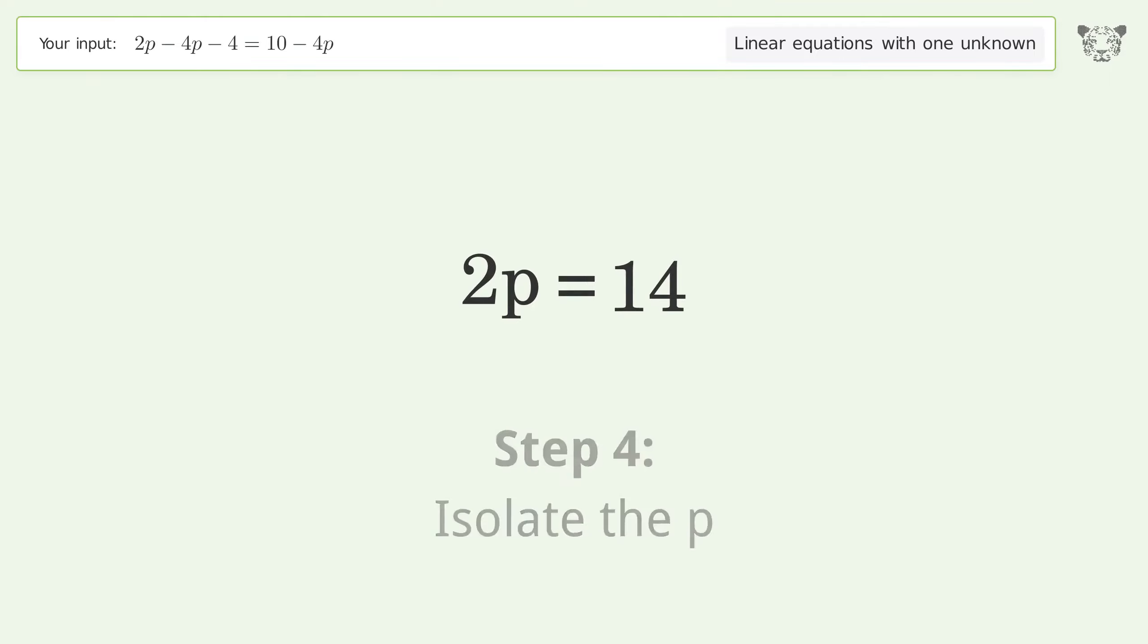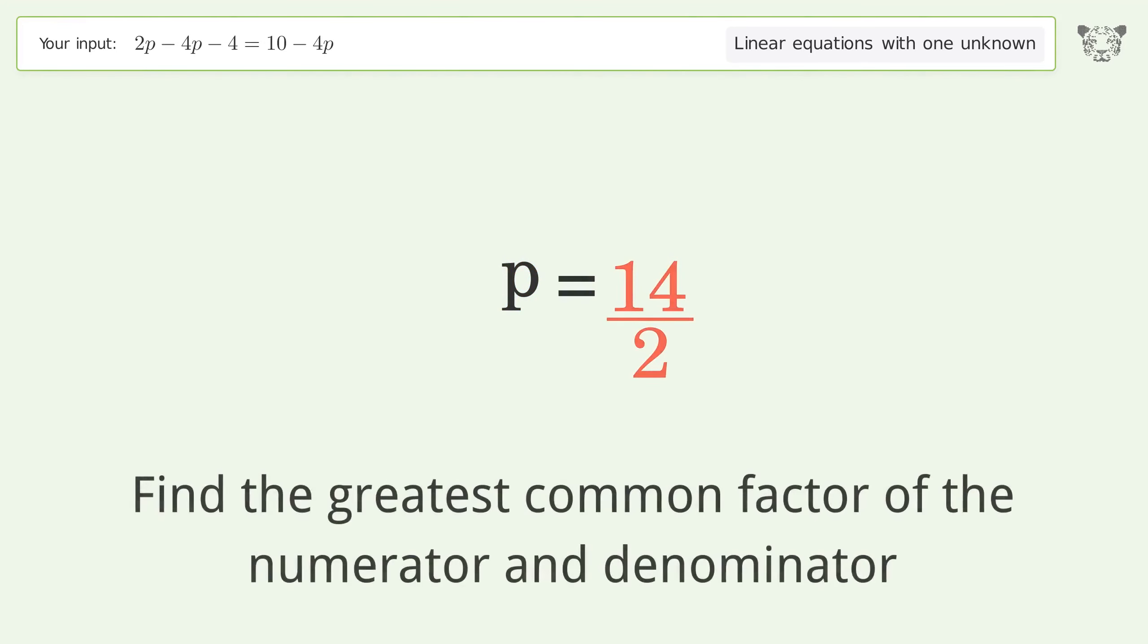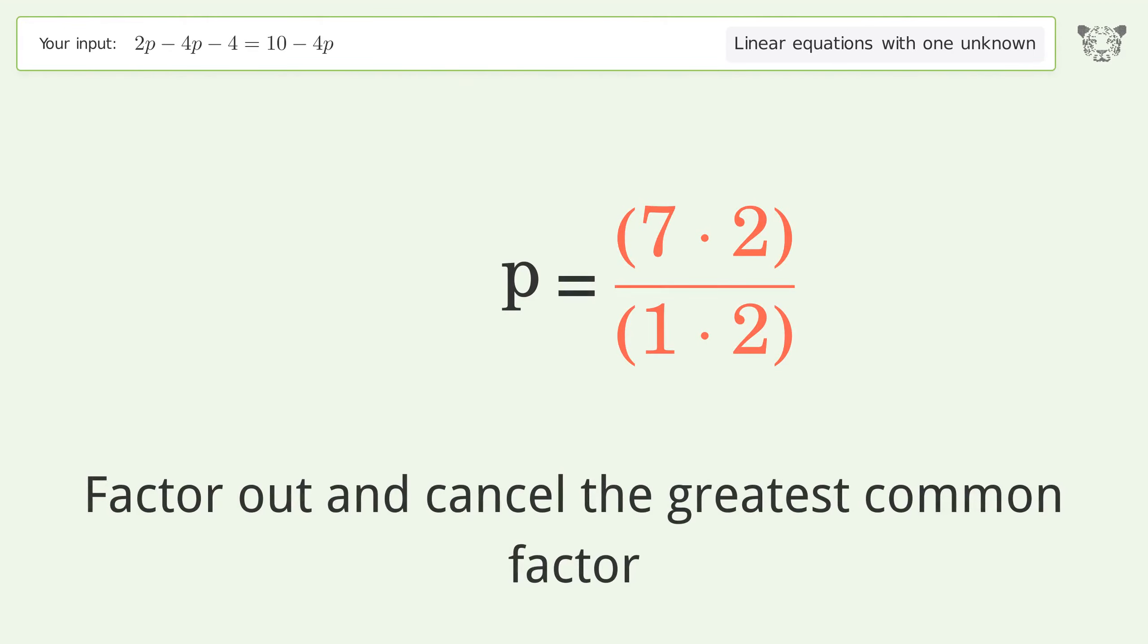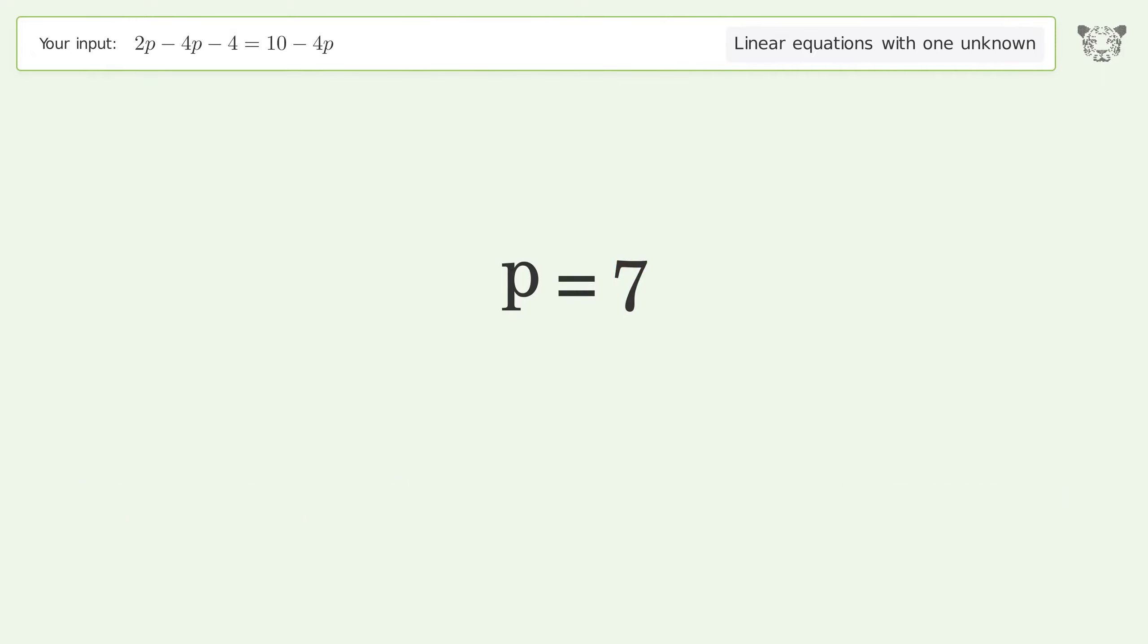Isolate the p. Divide both sides by 2. Simplify the fraction. Find the greatest common factor of the numerator and denominator. Factor out and cancel the greatest common factor. So the final result is p equals 7.